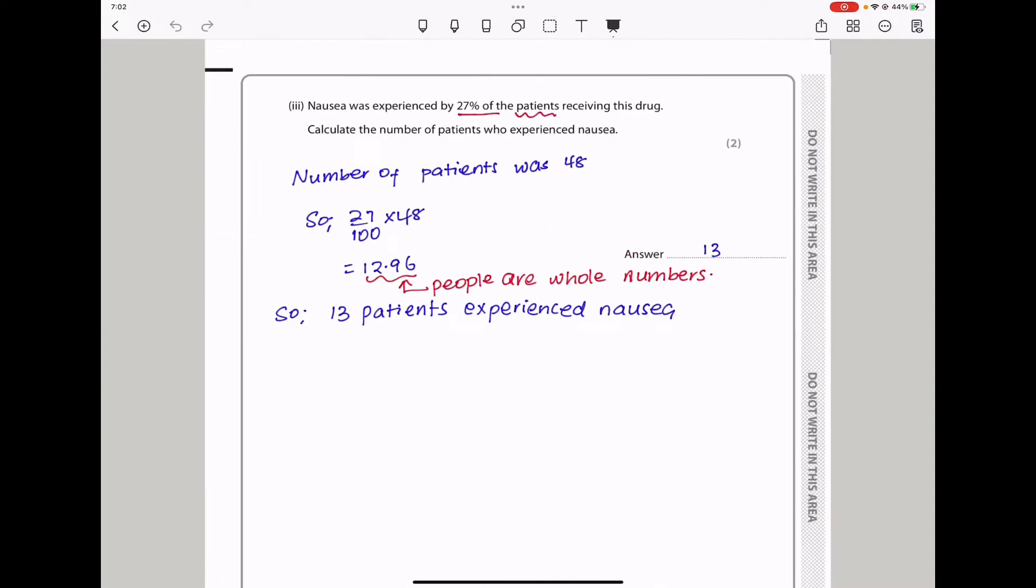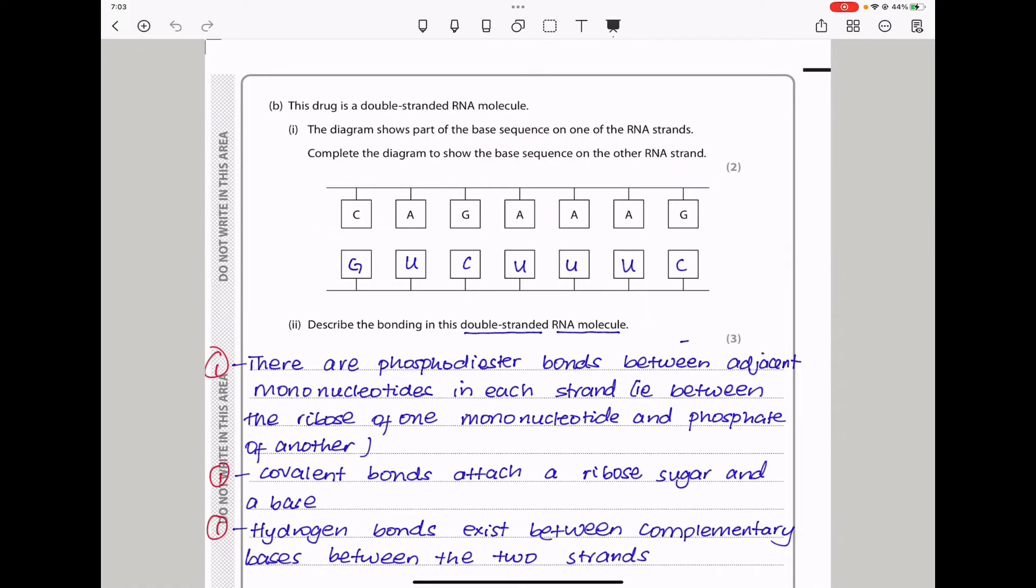Here they say, nausea was experienced by 27% of the patients receiving this drug. Calculate the number of patients who experienced nausea. Remember the number of people who received the drugs were 48. So 27% is 27 over 100 times 48, which gives us 12.96. However, people are in whole numbers. So round this off to the nearest whole number, which gives 13. So 13 patients experienced nausea.